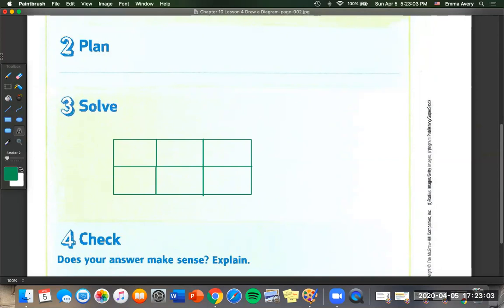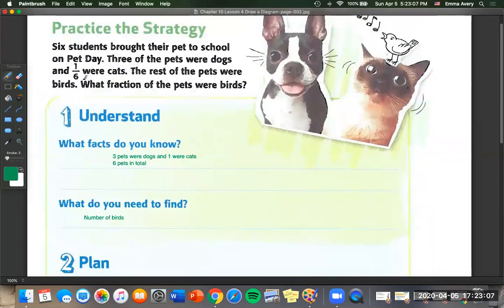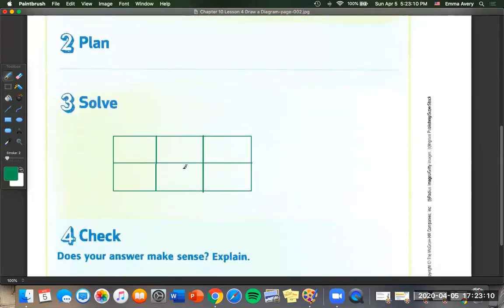So we know that there was one cat. That's what they tell us up here. One sixth for cat. So cat. And then we have dog, dog, and dog. So how many birds does that leave us? So we've got this space and this space. So that means two sixths are birds.